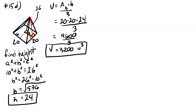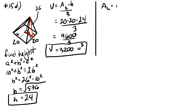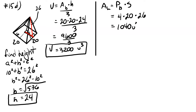Now we'll find the lateral area. The lateral area equals the perimeter of the base times the slant height divided by two. The perimeter of the base is four times twenty, since the base has twenty on each side. Multiplying that by the slant height of twenty six, we end up with one thousand and forty units squared.